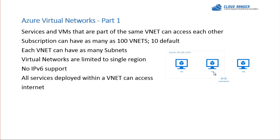Let's talk about some standard details about virtual networks in an Azure subscription. One is that a subscription can have as many as 100 virtual networks, and by default they give you 10. If you need more than 10, you'll have to call Microsoft and ask them to increase it. Having said that, this can obviously change, as Microsoft keeps building more into Azure.